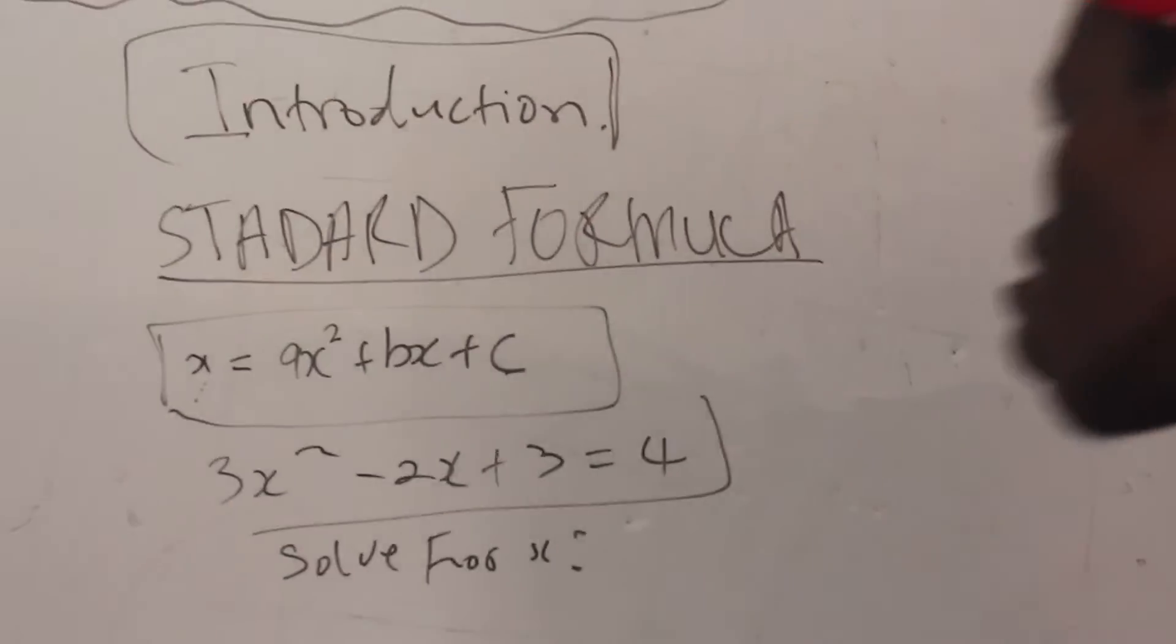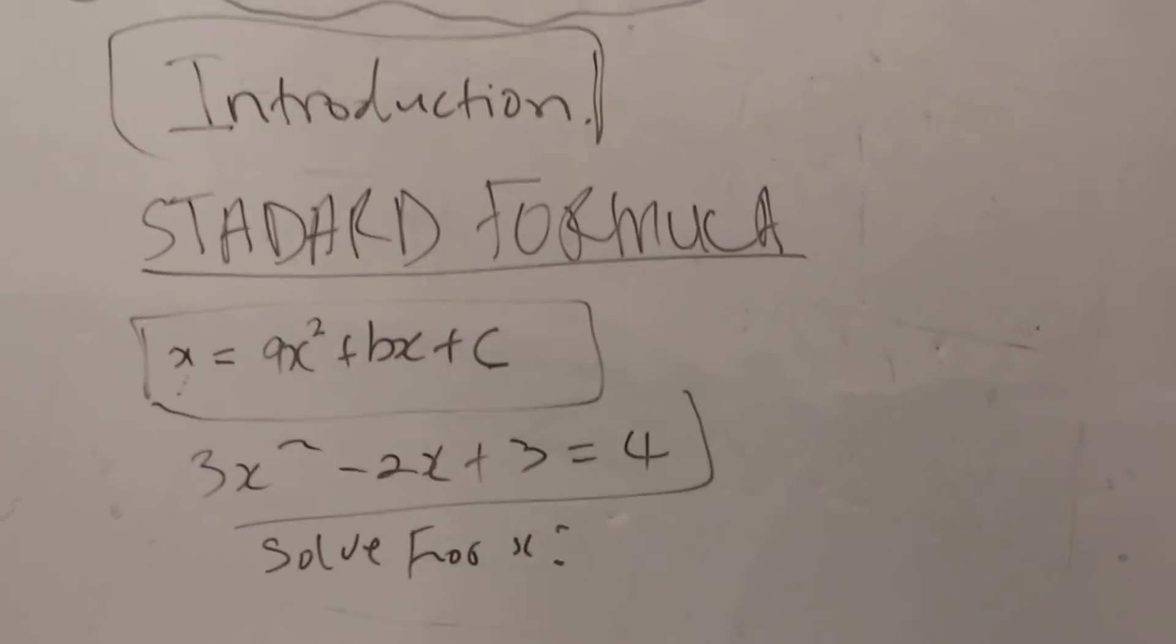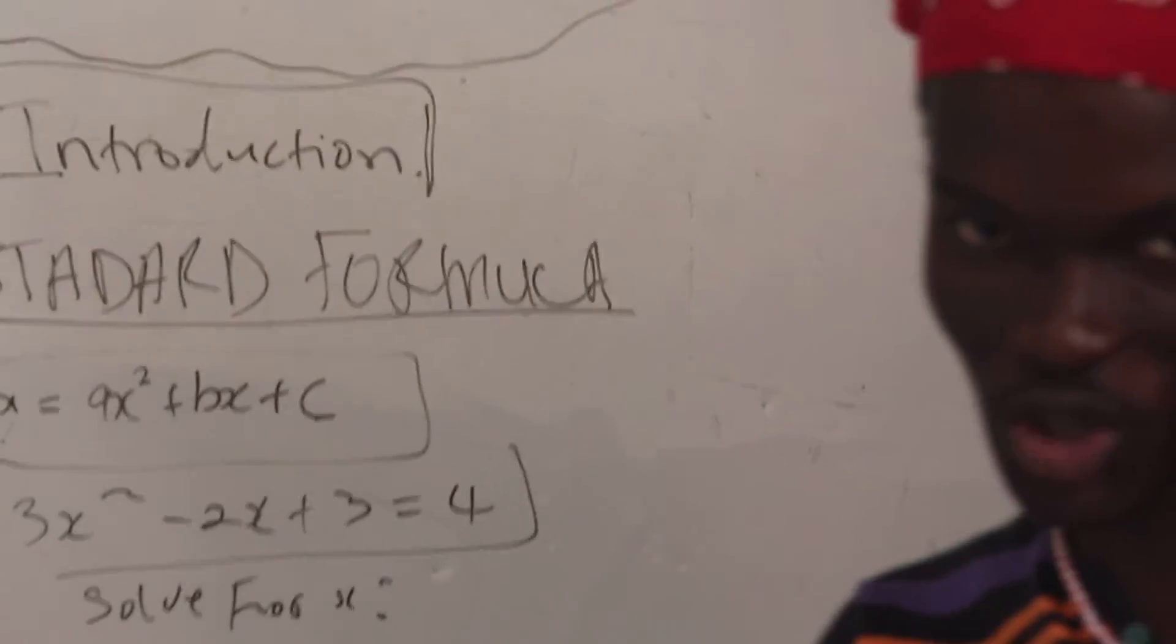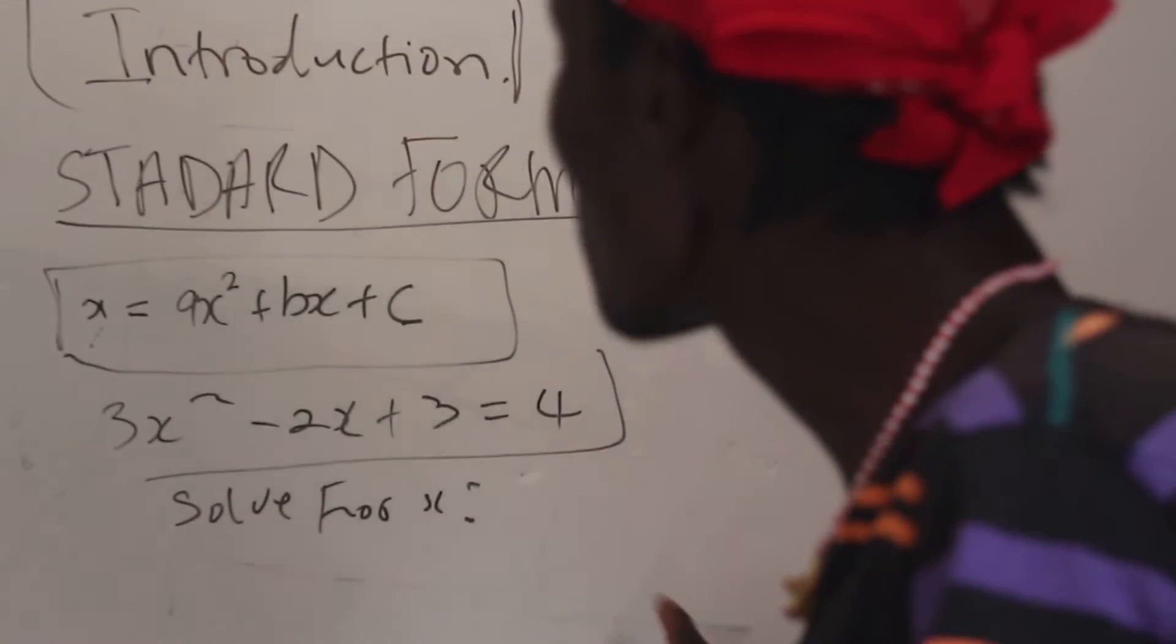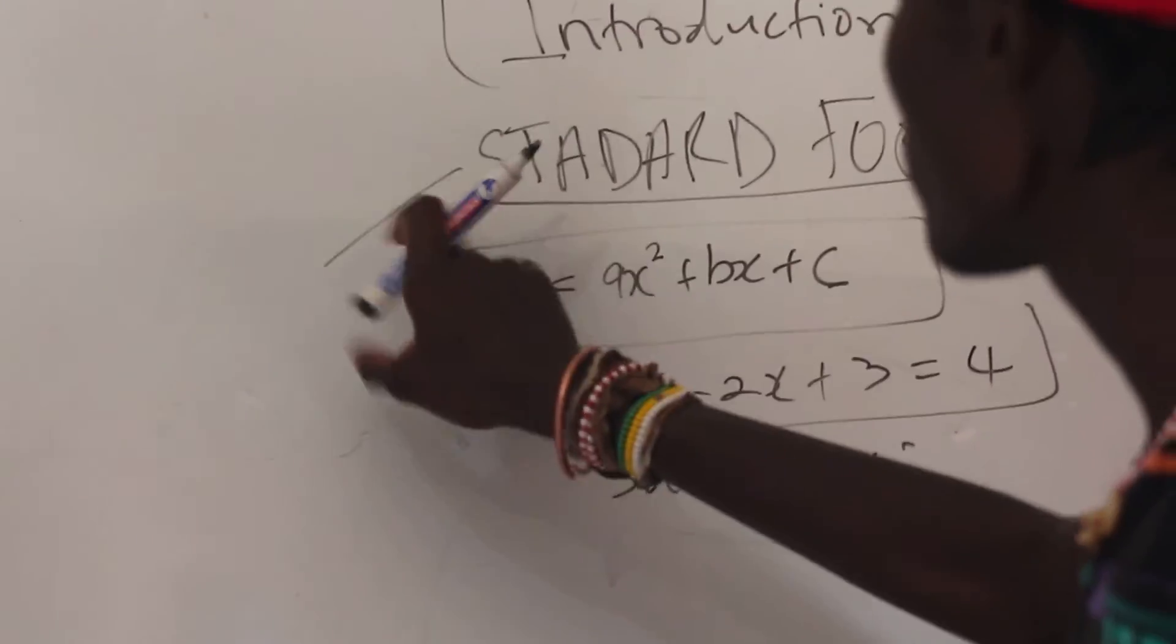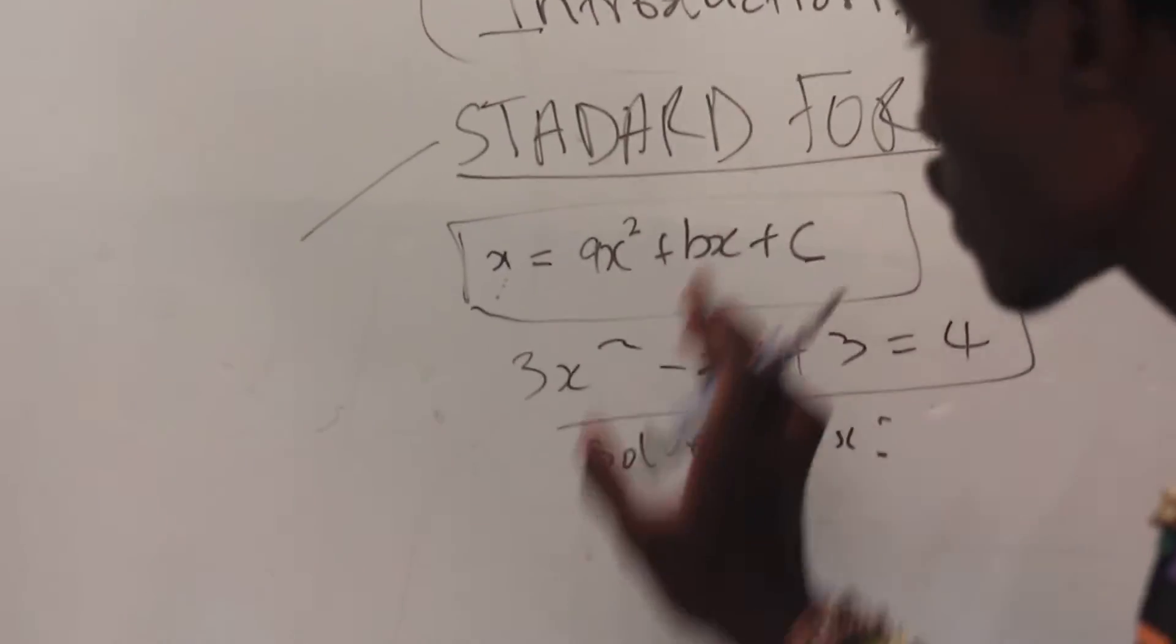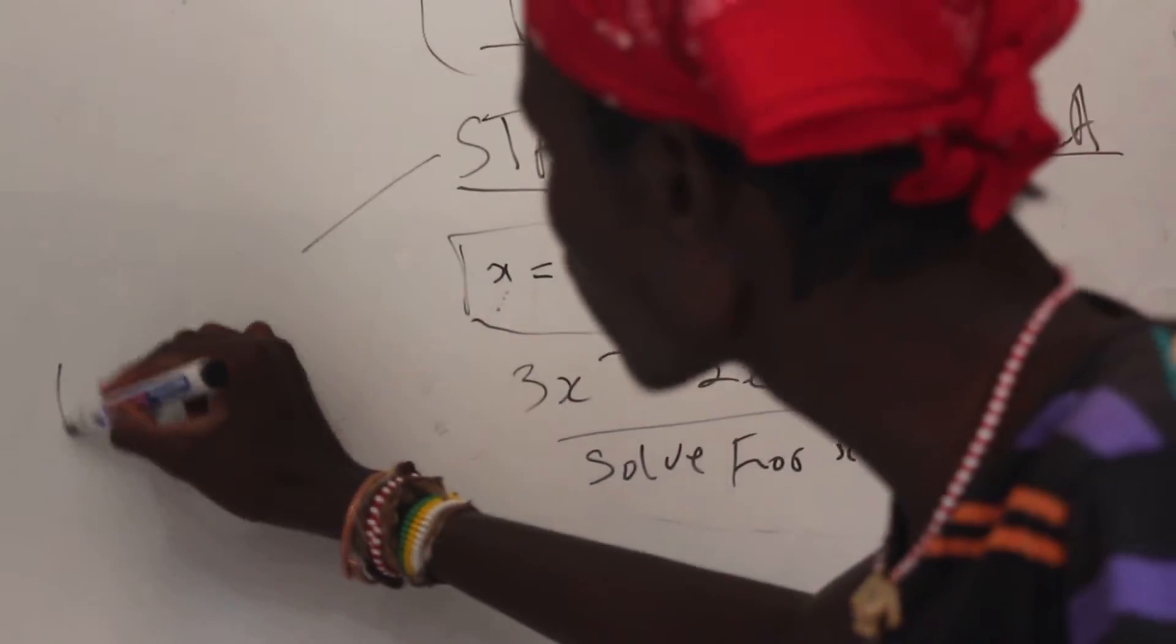If we solve for x, you have to factorize. What if you don't know how to factorize? I was very very bad at factorizing at high school. So what did I used to do? I used to use what we call the standard formula. The standard formula gives birth to what we call the quadratic formula.